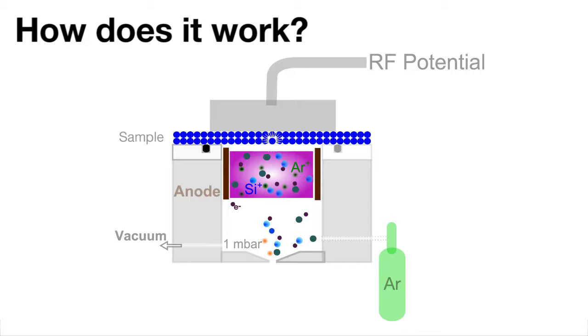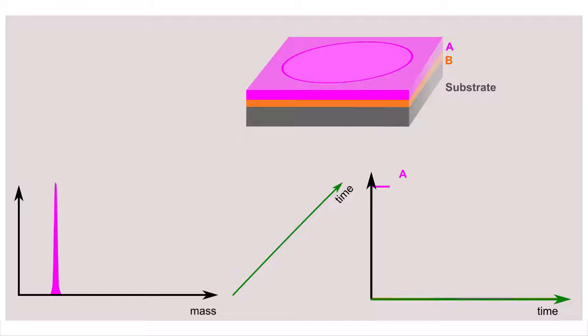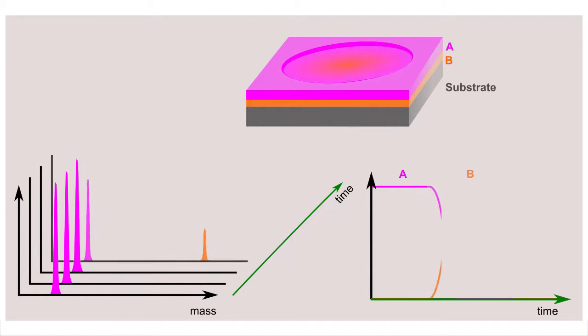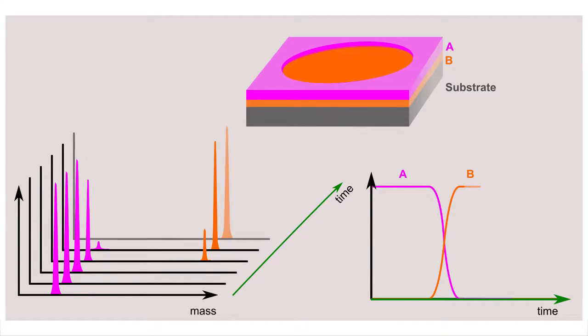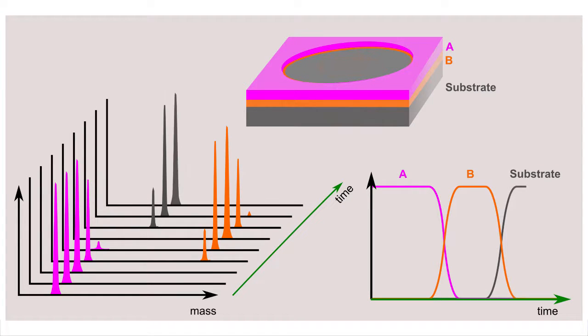The sputtered species are ionized in the plasma. Ions are then transferred into a time-of-flight mass spectrometer. A continuous spectrum covering the full mass range of the periodic table is collected every 30 microseconds. This allows determination of any element at any point in the depth profile.